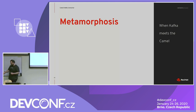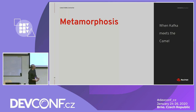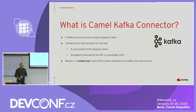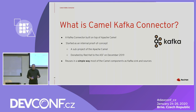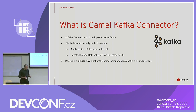So what happens when you mix these two super flexible, super powerful projects? Let's meet the Camel Kafka Connector. The Camel Kafka Connector is a Kafka Connector that was built on top of Apache Camel. At Red Hat we started it as a proof of concept to evaluate feasibility. After a successful proof of concept, we donated the code to the Apache Software Foundation, and it became a sub-project of Apache Camel.